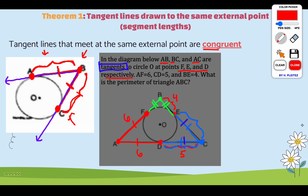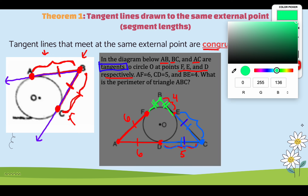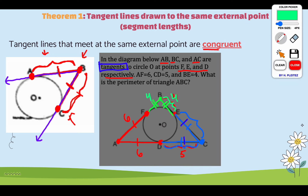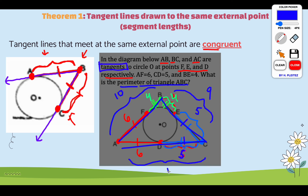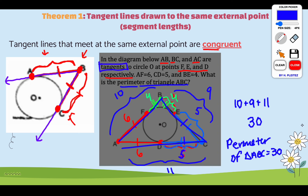Filling the values in: AF and AD are both 6, BE and BF are both 4, and CD and CE are both 5. Going back to the question — it wants the perimeter of triangle ABC. We need each side length: we have 10 here, 9 here, and 11 here. So we do 10 plus 9 plus 11, which gives us 30. The perimeter of triangle ABC equals 30. Highlighters really help here, but if you don't know the theorem you'll be lost — so commit these theorems to memory.